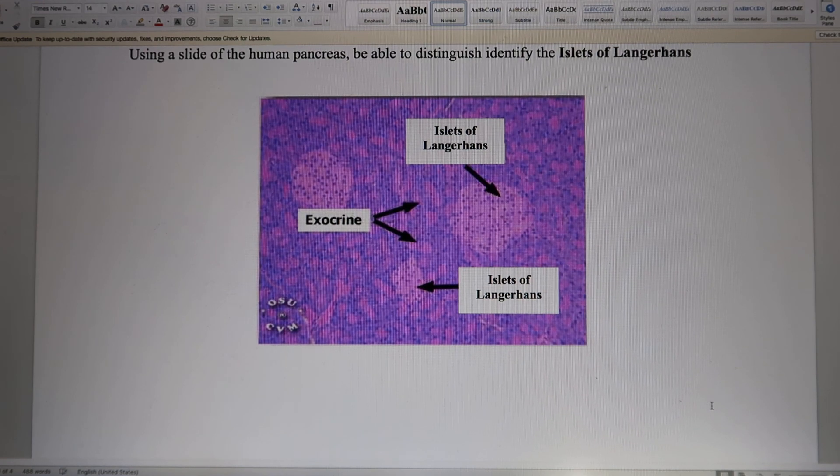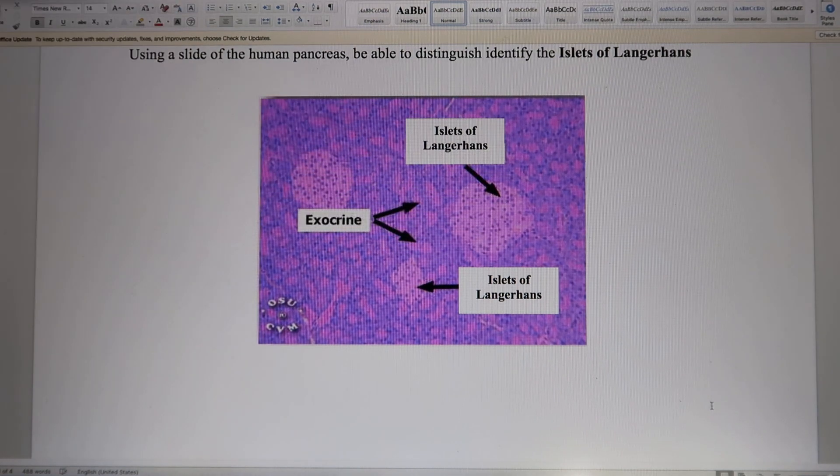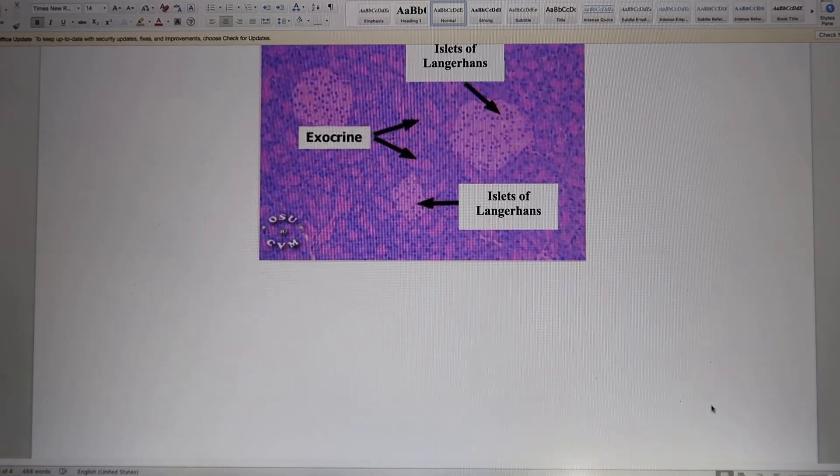And glucagon is released to increase your blood sugar. When you're super hungry, your body's going to release glucagon. So both of them are released from the islets of Langerhans. Okay, that's it.